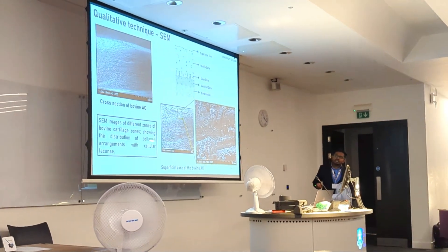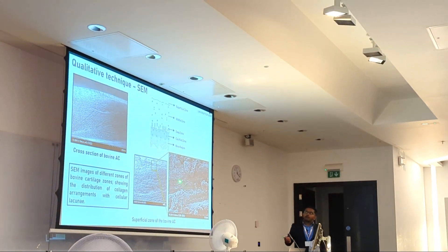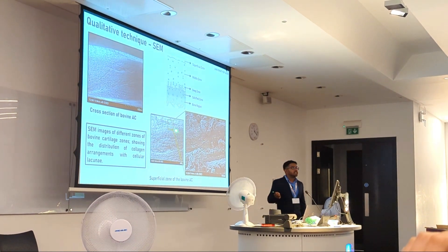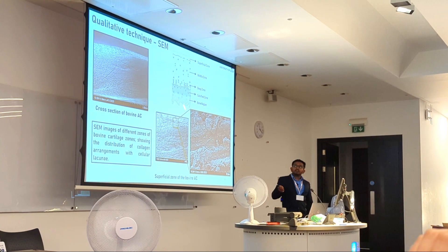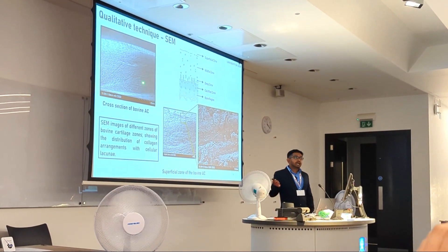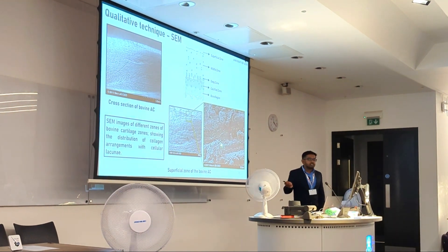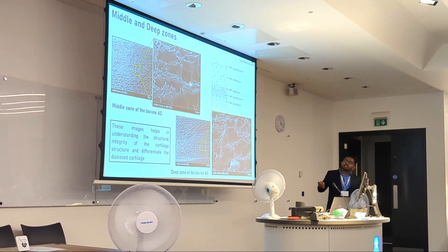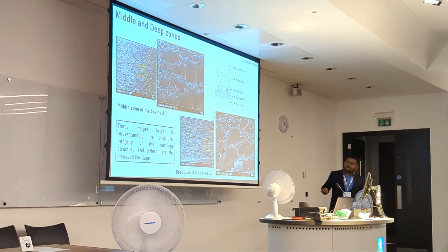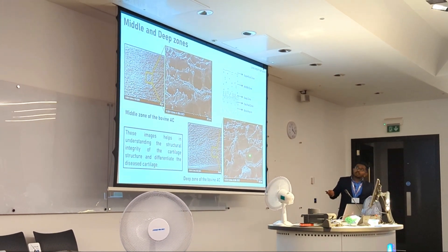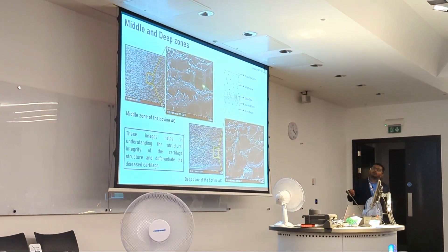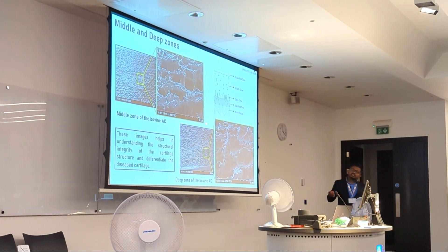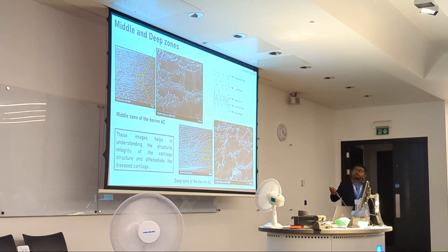To understand how collagen fiber arrangement or proteoglycan damage occurs, we are imaging the zones. This image shows the superficial zone with thick collagen fibril arrangement in healthy bovine cartilage. In the middle zone we can see the arrangement of collagen fibrils with cellular lacunae, and the same is seen in the deep zone. The main difference between these two zones is the size of the cellular lacunae — in the middle zone the cellular lacunae are much smaller compared to those in the deep zone.